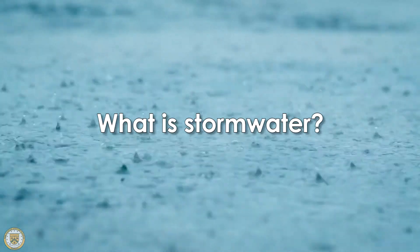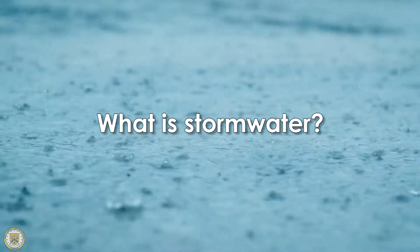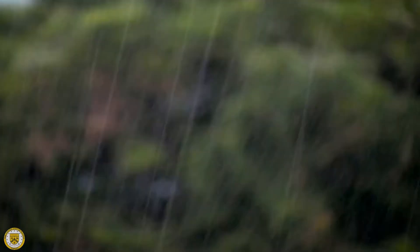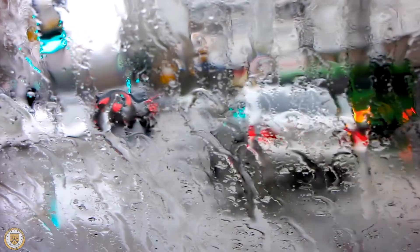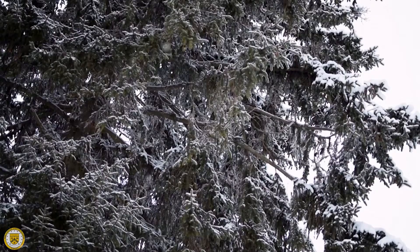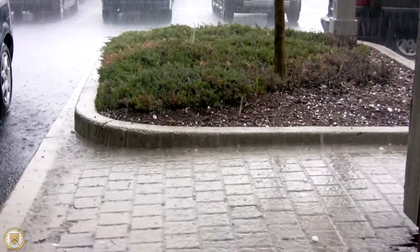But first, let's discuss what is stormwater. Stormwater is any precipitation that falls from the sky. That can be in the forms of rain, sleet, snow, or hail.